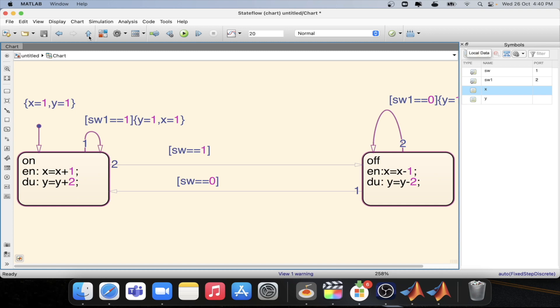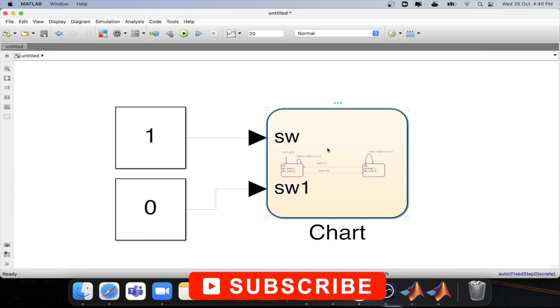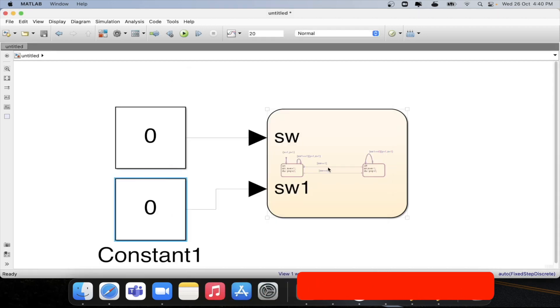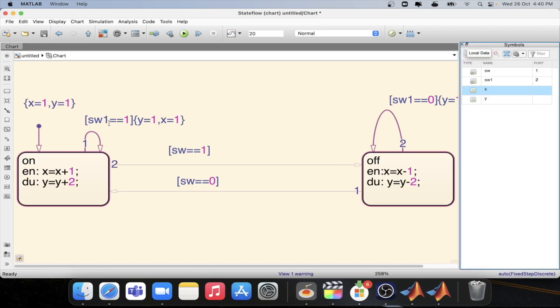We try to simulate this model. So first we will be keeping this as 0 because we want to stay in the on state. And we will keep this also as 0 so that the condition will not satisfy. Now let's step. Now we will be able to see the values of x and y. X is 2 and y is 1.